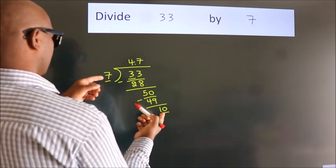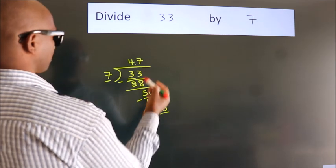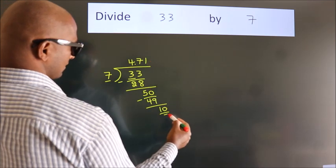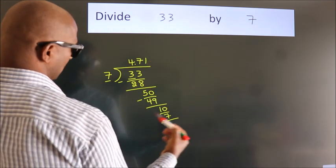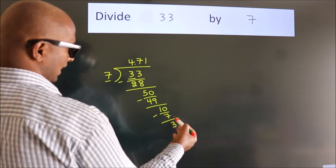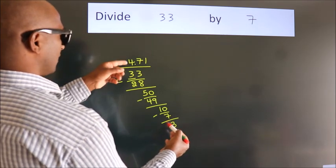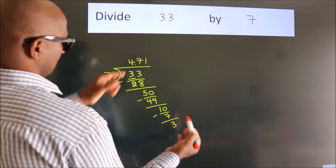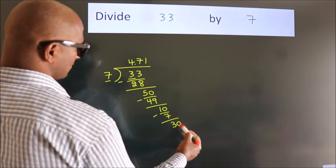A number close to 10 in the 7 table is 7 ones, 7. Now we subtract. We get 3. After this, we already have the decimal, so directly take 0. So 30.